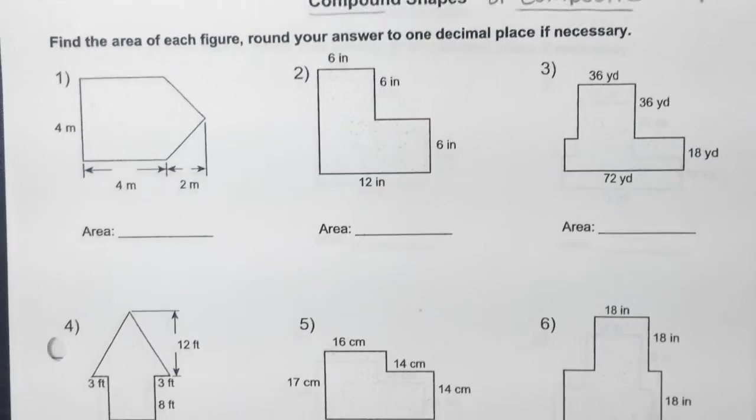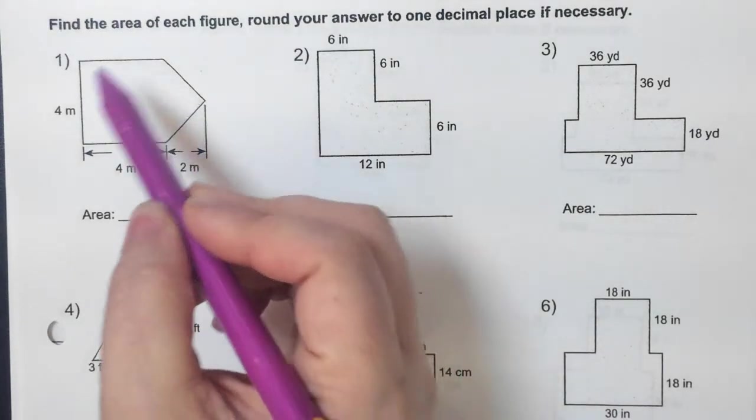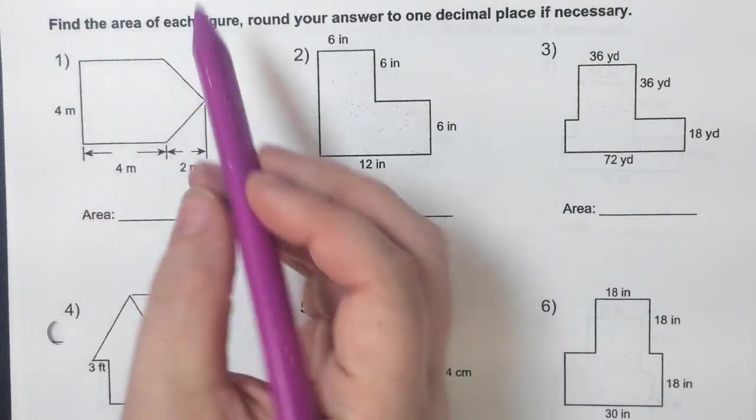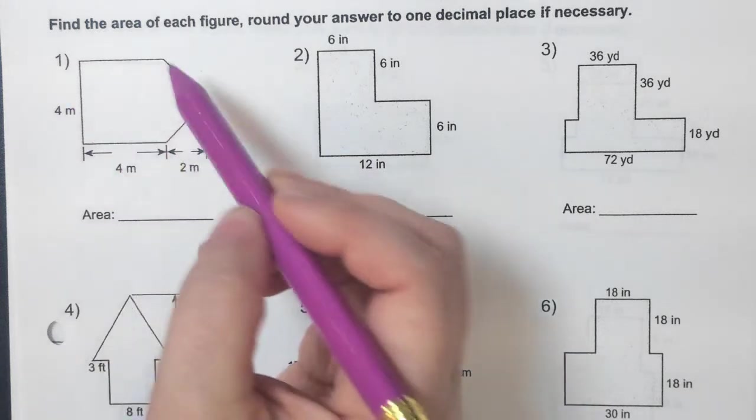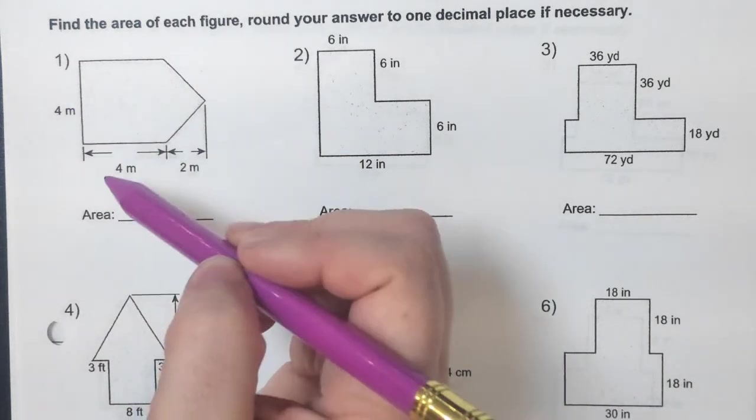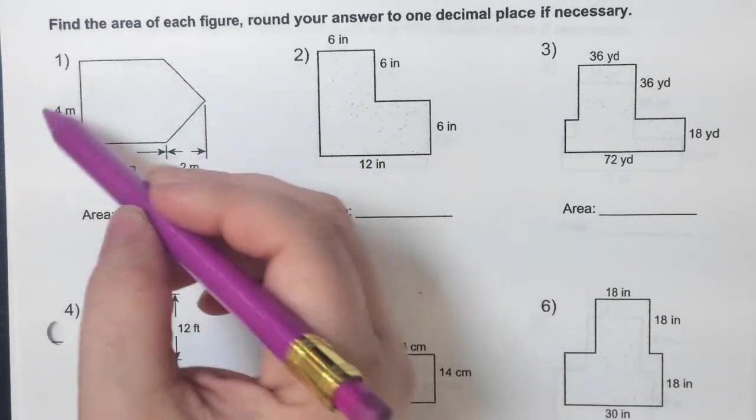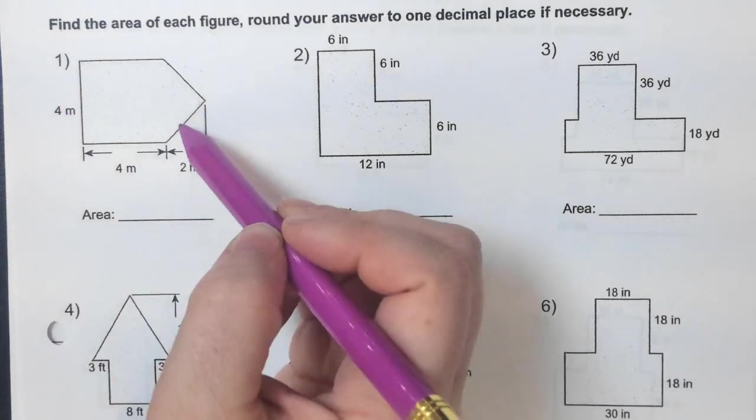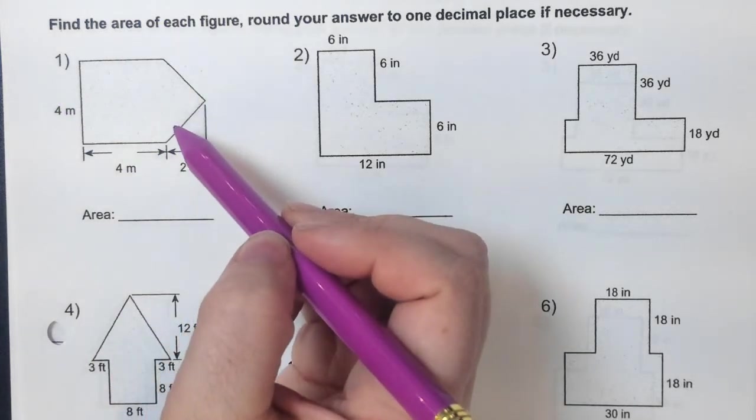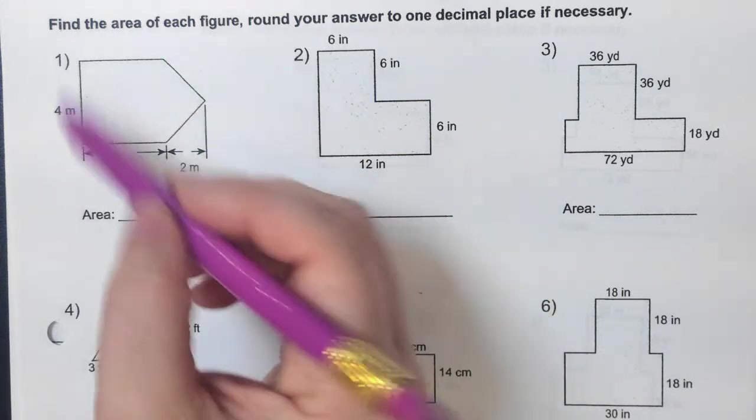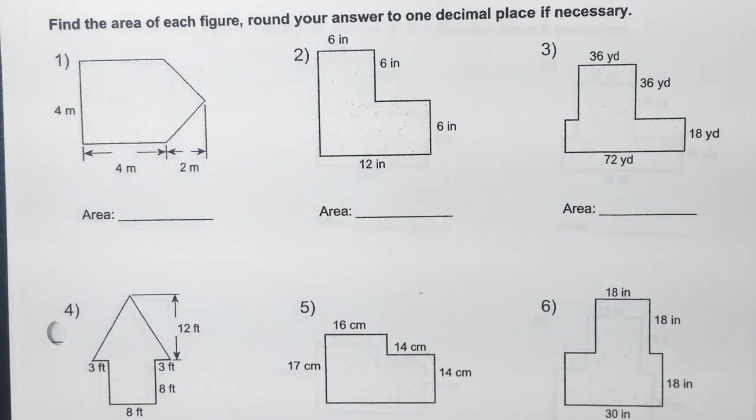Alright. For number one, I need to split this shape up because we don't, like this doesn't have a name. Besides, I could say it's a pentagon because it has one, two, three, four, five sides. Do we know anything about pentagon formulas? No. So we're definitely going to want to split this up.